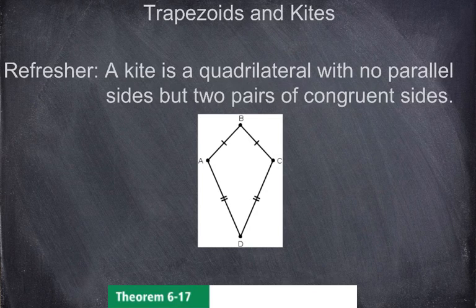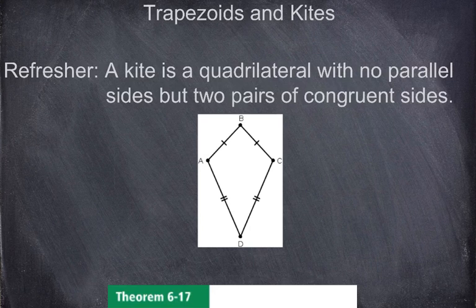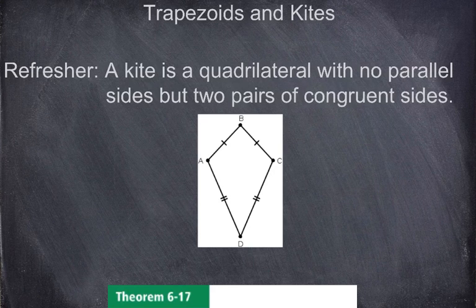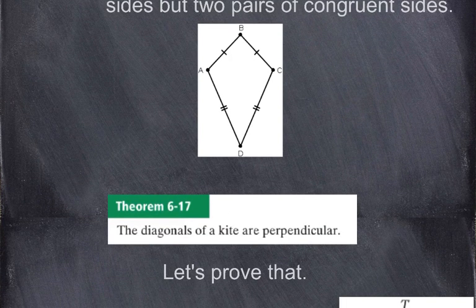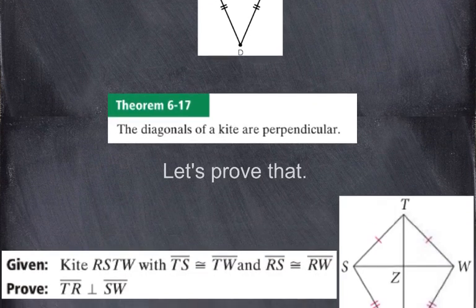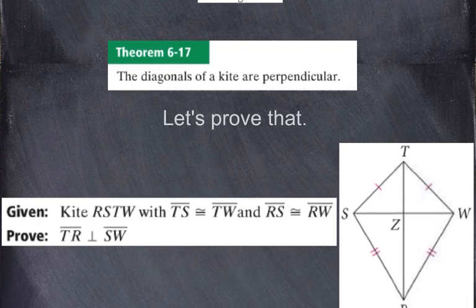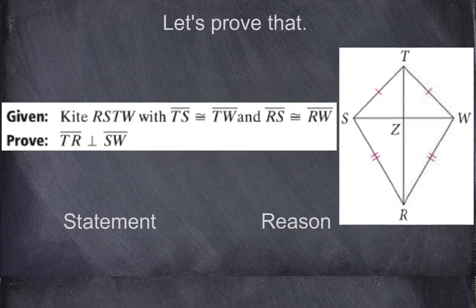Now let's take a look at a kite. A kite is a quadrilateral with no parallel sides but two pairs of congruent sides. The two shorter sides AB and BC are congruent to each other, and the two longer sides AD and CD are congruent. The diagonals of a kite are perpendicular, meaning they form right angles at their intersection. We'll do a proof to prove that to be true.